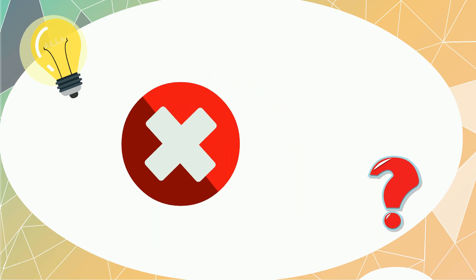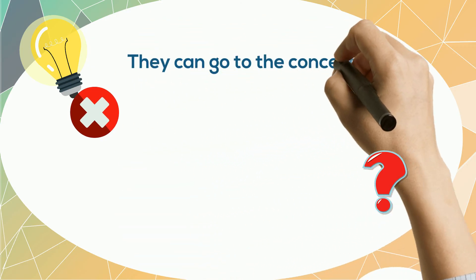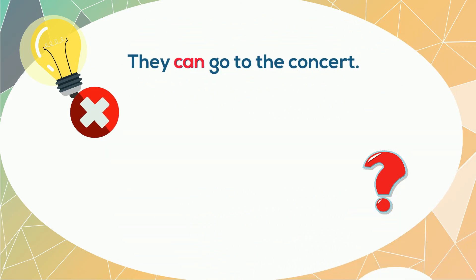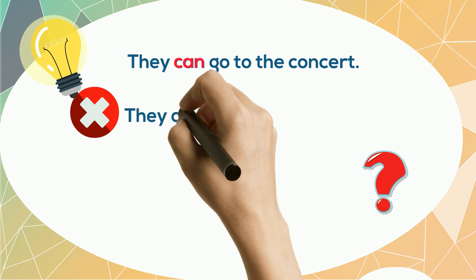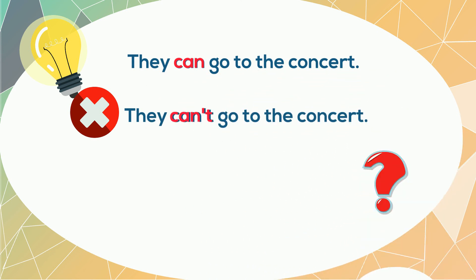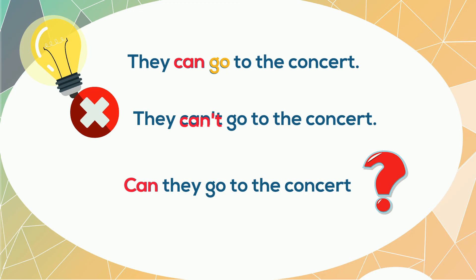Helping verbs and linking verbs are used to form questions and negative sentences. For example: "They can't go to the concert." "Can" is a helping verb — it shows possibility. To form a negative sentence, just add "not" to the helping verb: "They cannot go to the concert" or "They can't go to the concert." To form a question, just start with the helping verb: "Can they go to the concert?"